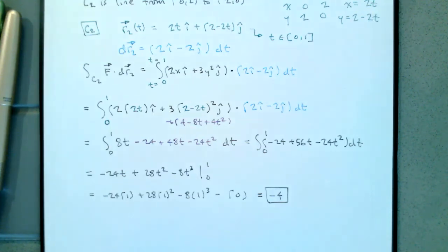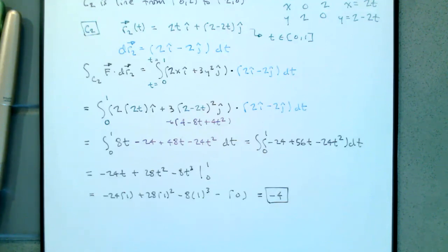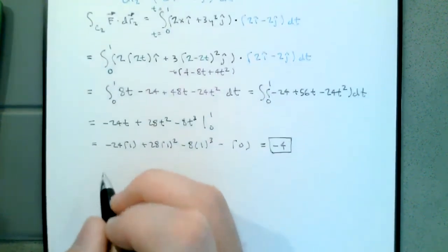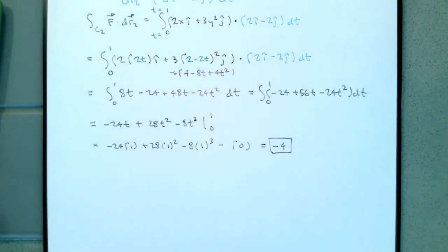At this point, we noticed that we got the same value, negative 4. It could be a coincidence, but since I mentioned it, we know it's totally not just a coincidence. The reason that we got the same value is that the vector field is a gradient field.